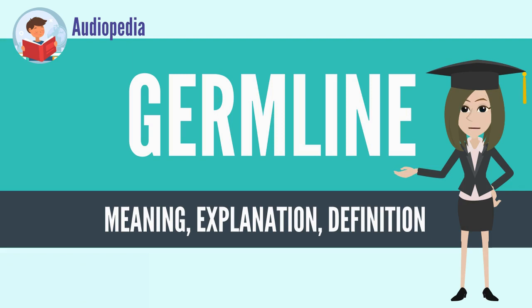The cells of the germline are commonly called germ cells. For example, gametes such as the sperm or the egg are part of the germline. So are the cells that divide to produce the gametes, called gametocytes, the cells that produce those, called gametogonia, and all the way back to the zygote, the cell from which the individual developed.